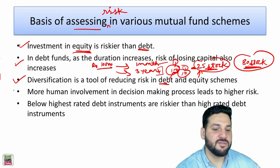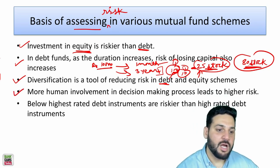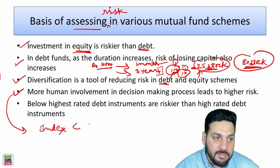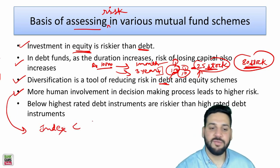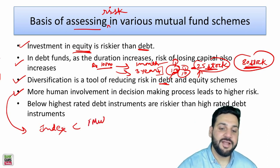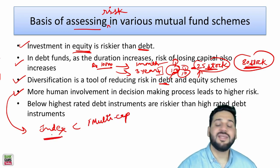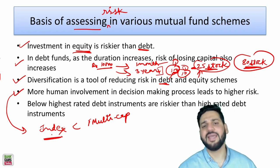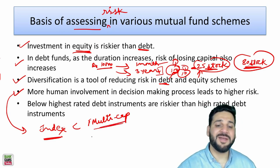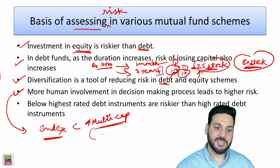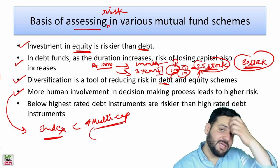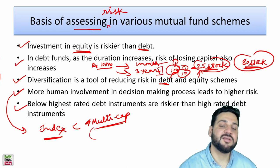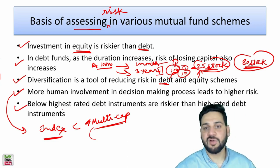Fourth: more human involvement leads to higher risk. Index funds are less risky than actively managed funds like focused funds or multi-cap funds. In an index fund, the fund manager is simply tracking an index — no decisions are being made. But in a multi-cap fund, a fund manager can make wrong decisions while selecting stocks, introducing the scope for human error.